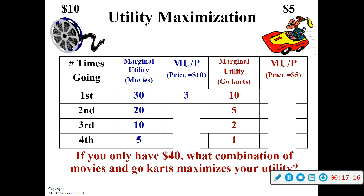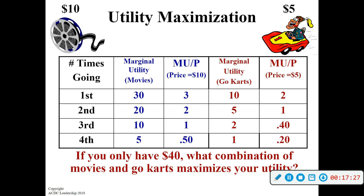You consider the go-karts: the first time you drive the go-karts, you're going to get 10 utils. The price is $5. So what's your utility per dollar? Two. If you were to continue going down, calculating all those — utility per dollar spent for each of these activities.